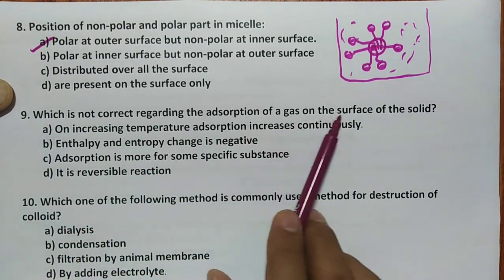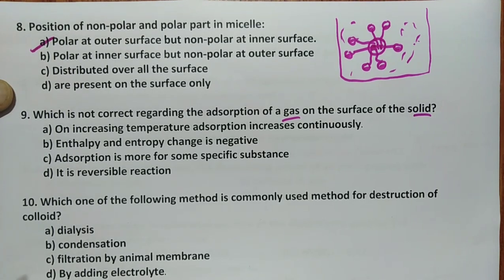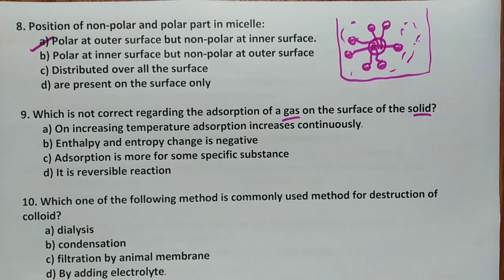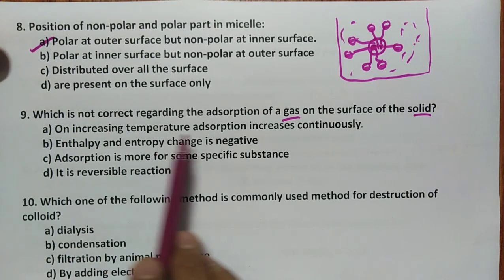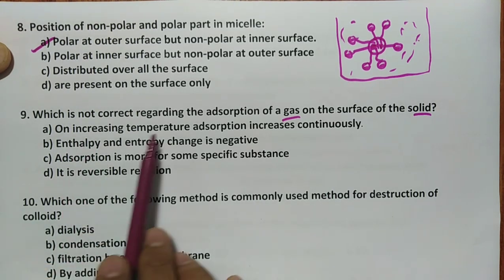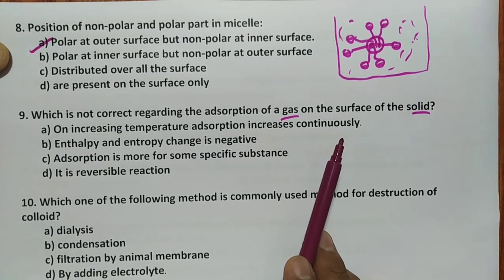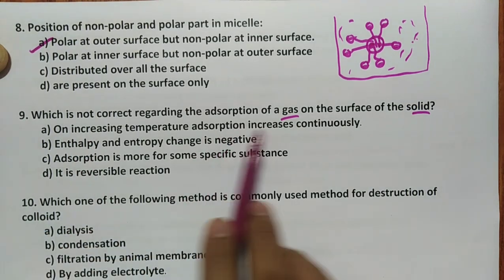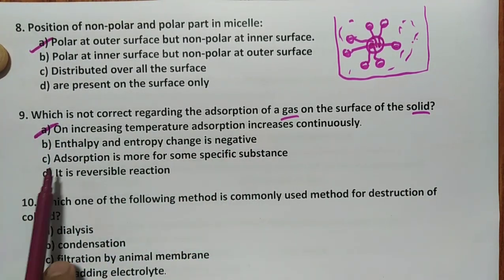Which is not correct regarding adsorption of gas on the surface of solid? On increasing temperature, adsorption increases continuously. We know that in any adsorption, increasing temperature decreases the adsorption. In chemisorption, high temperature is favorable for chemisorption, but higher than normal temperature also decreases adsorption. So hence, increasing temperature adsorption increases is definitely wrong. Enthalpy entropy change negative, adsorption is more specific, irreversible, everything is correct, but A is wrong.